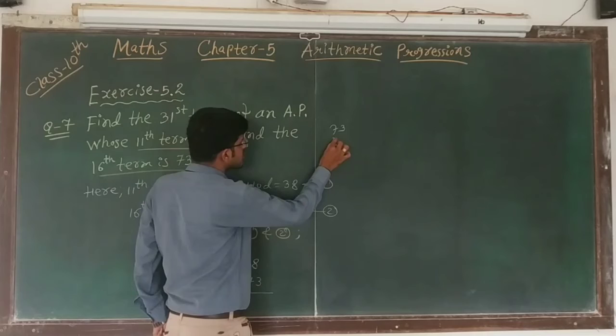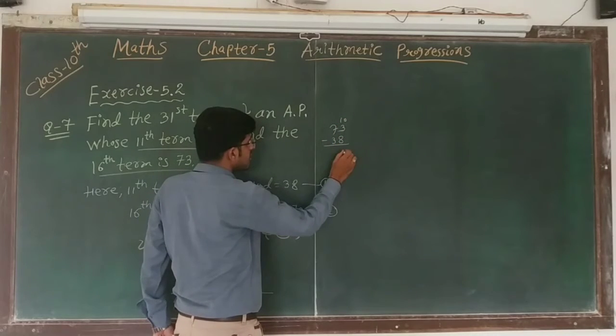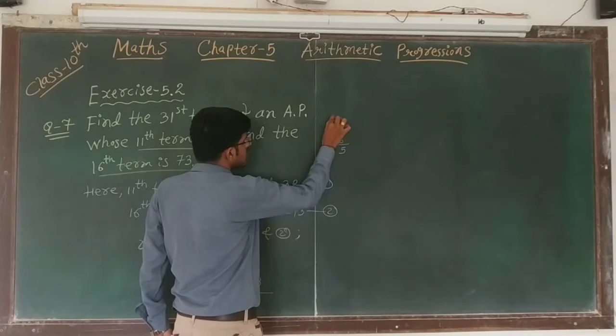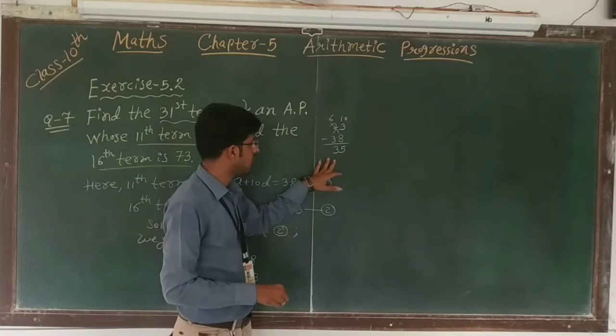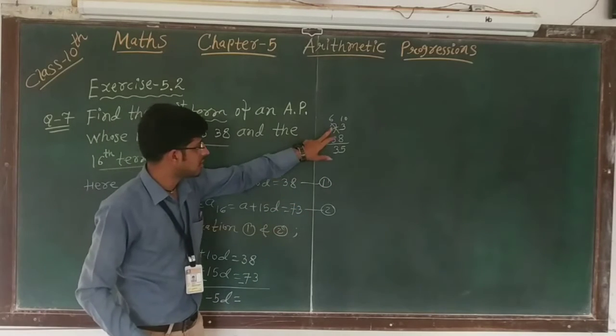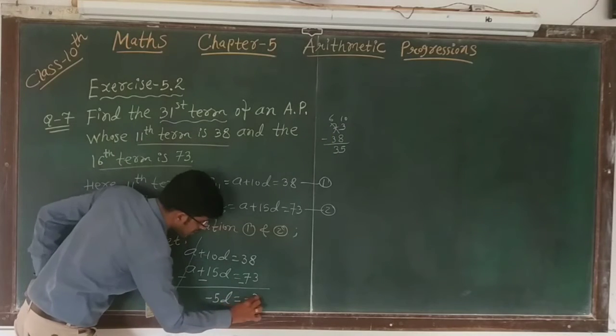73 minus 38: 13 minus 8 is 5, 6 minus 3 is 3, so the answer is 35. We will subtract 73 minus 38, but in our equation this gives minus 35.